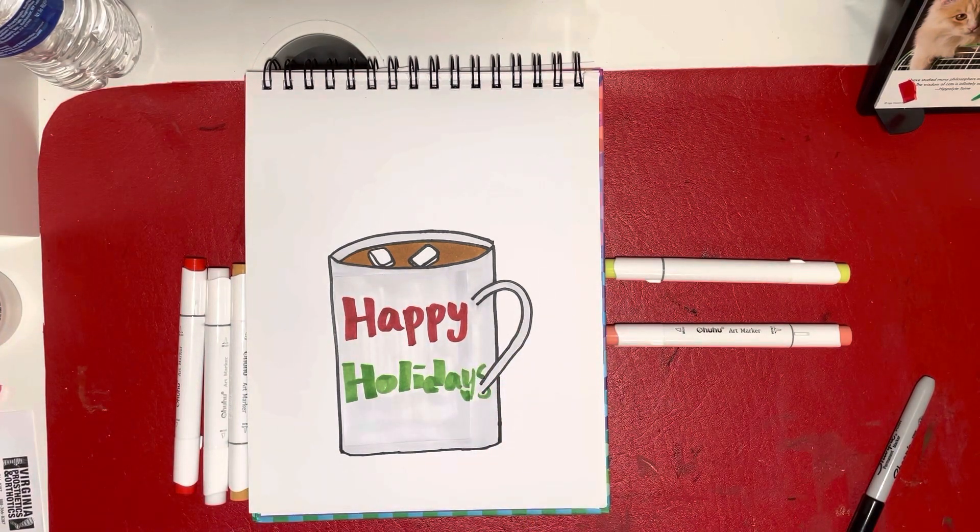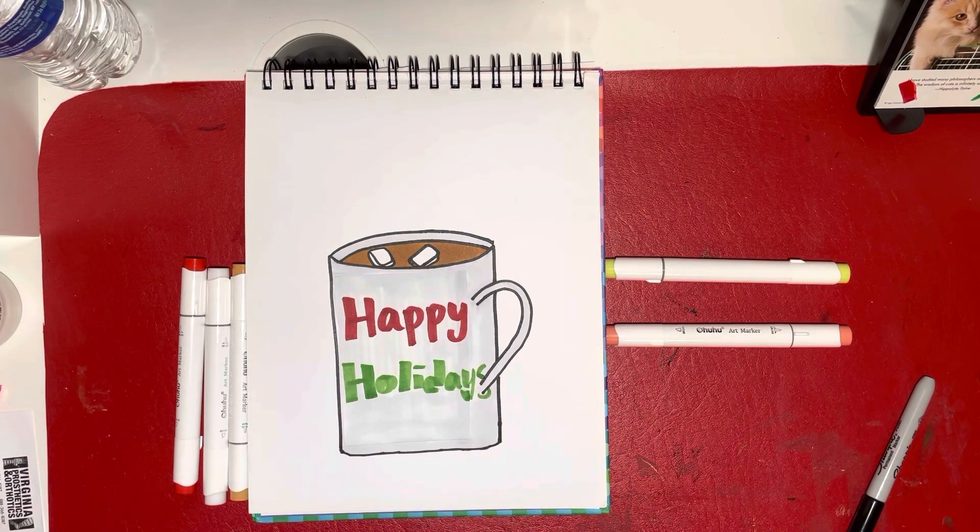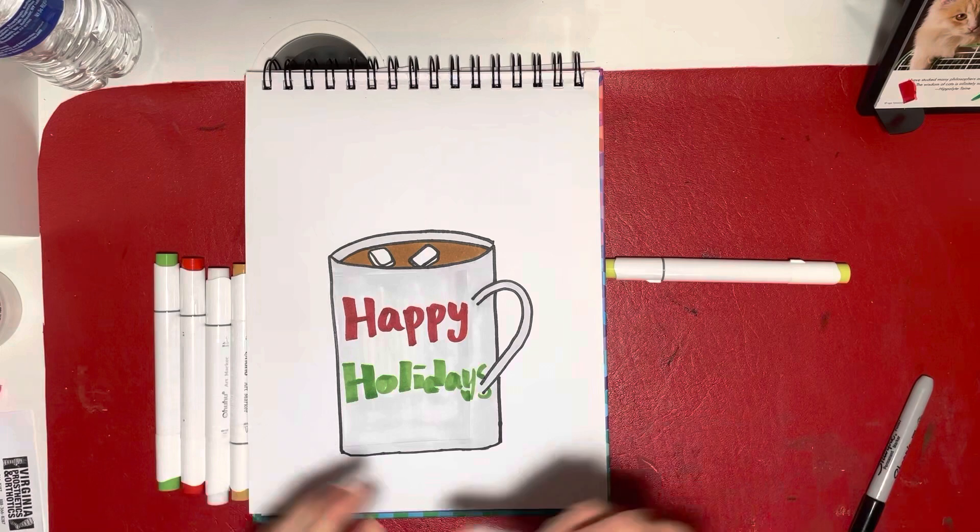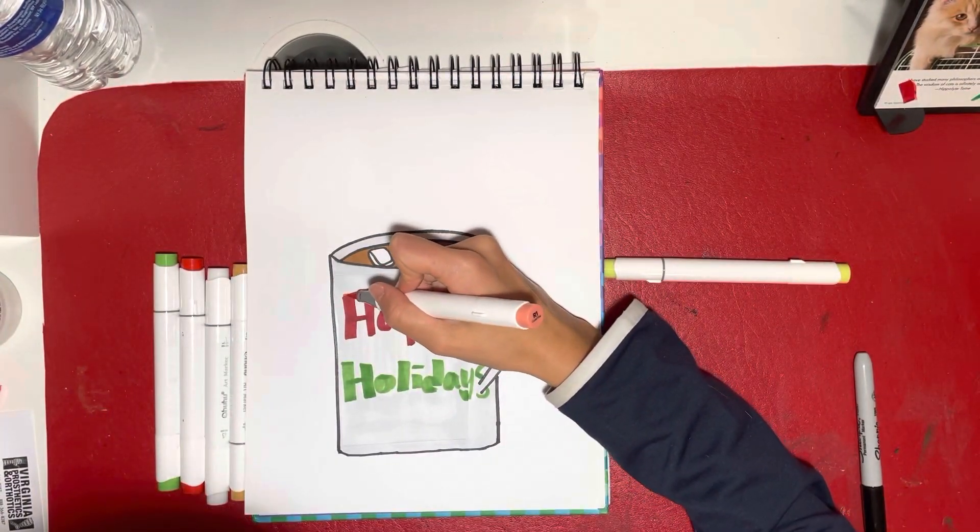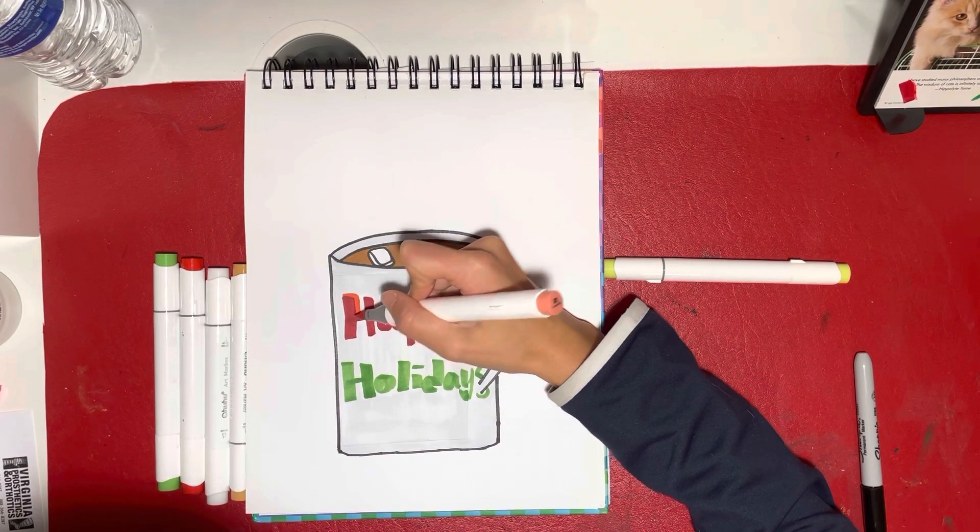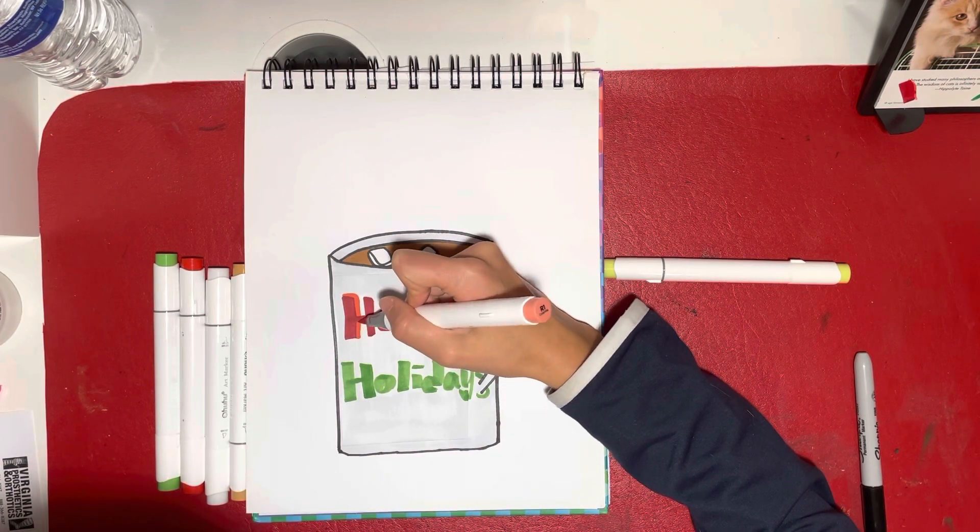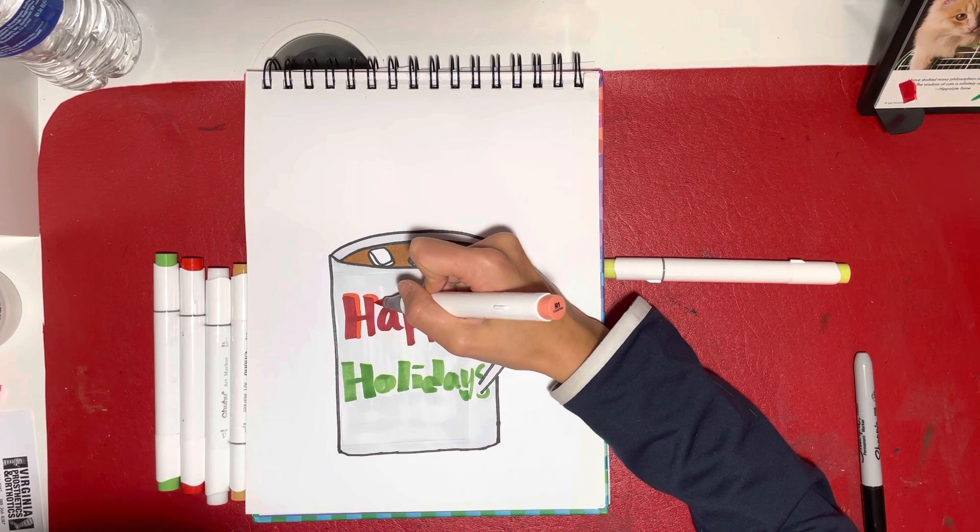And the lettering is not very good on the Holidays, but that's okay. I'm going to go ahead and add a little shadow. So on the top of everything and the right side of everything, I'm going to draw a line using my lighter color.